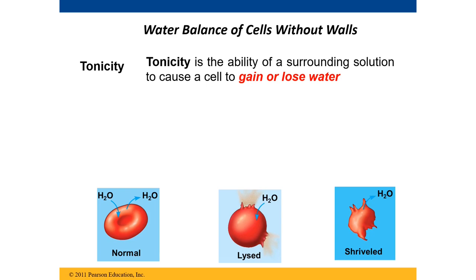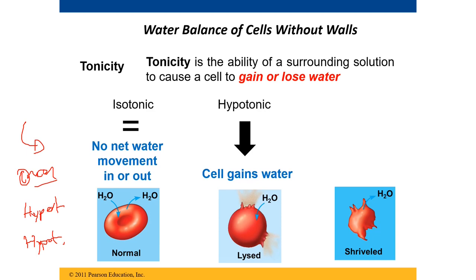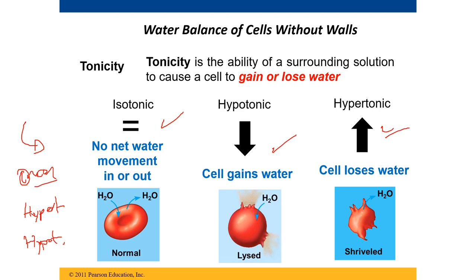A more difficult topic that may appear on the lab test is tonicity — studied with onions in lab. This includes hypertonic, hypotonic, and isotonic solutions. When a solution is isotonic, there is equilibrium; hypotonic solutions cause cells to gain water; hypertonic solutions cause cells to lose water. Be prepared to analyze diagrams and identify what happens under each condition.